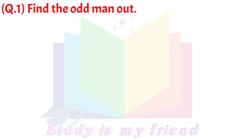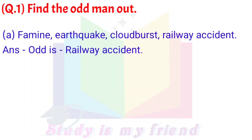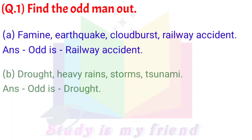Question 1: Find the odd one out. A) Famine, Earthquake, Cloudburst, Railway Accident. Answer: The odd one out is Railway Accident.